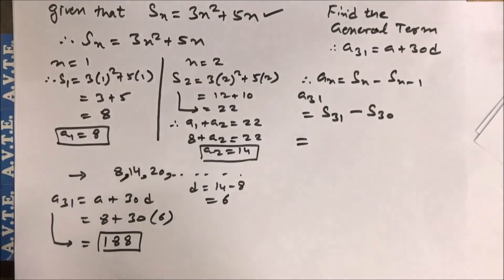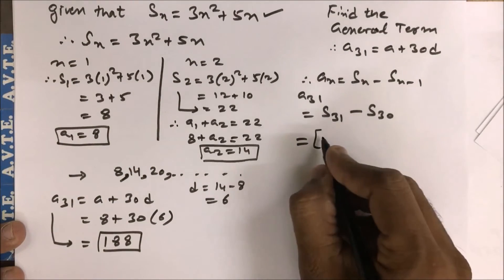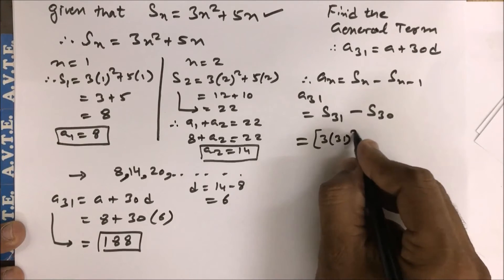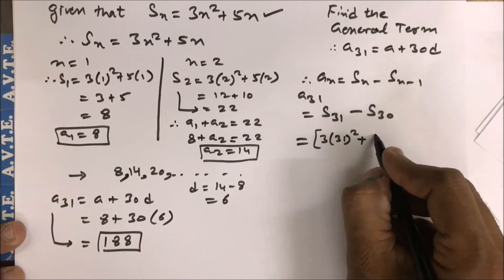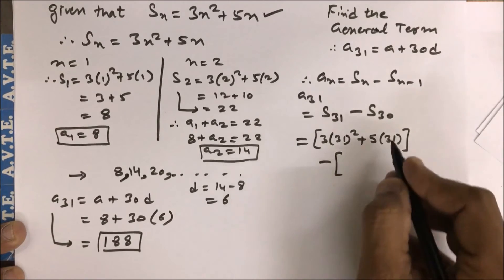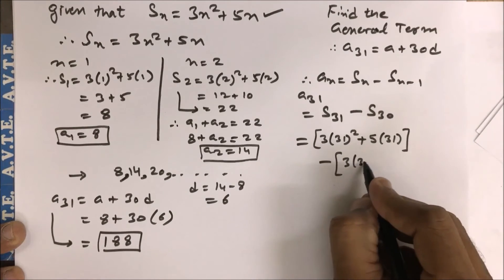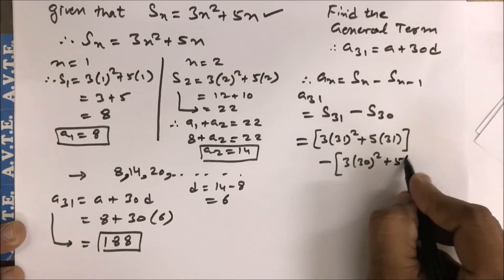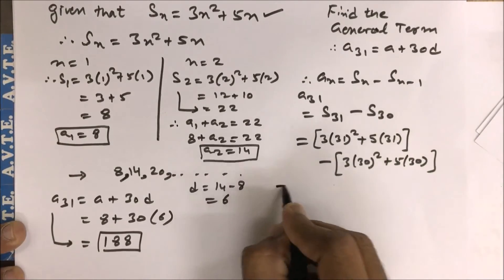So you have Sₙ like this: you can put n as 31 and you can put n as 30. So you can see here, 3 into 31 square plus 5 into 31, and minus n as 30, 3 into 30 square plus 5 into 30.